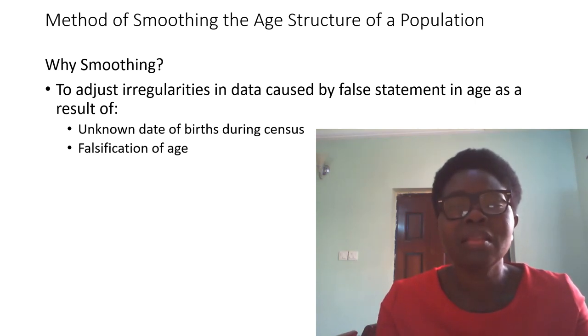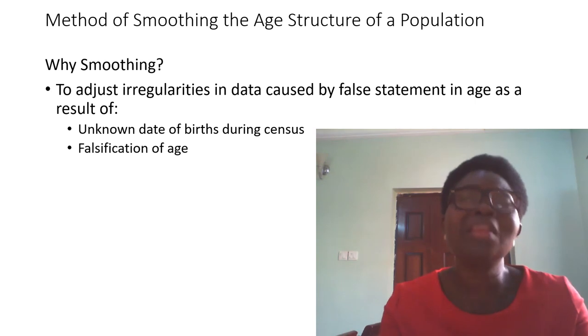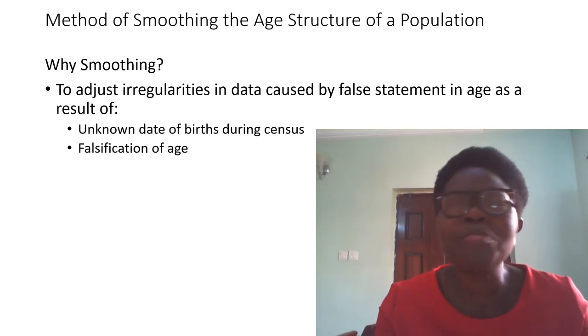The second reason is falsification of age. They know the dates but sometimes because of superstitious beliefs they feel nobody should know my date of birth, so they will give you a wrong date of birth. For some other reasons they will just give a date of birth that's not actually theirs. Some will wonder why do they want to know my date of birth?